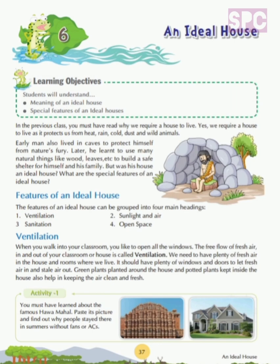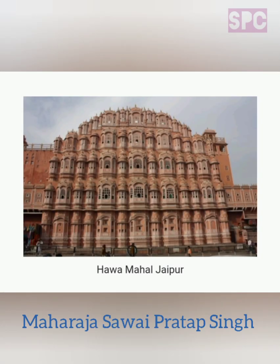Let's move to activity 1. You must have learned about the famous Hawa Mahal. Paste its picture and find out why people stayed there in summers without fans and ACs. The majestic Hawa Mahal or the Palace of Winds is often the first visual that comes to mind when one thinks of the pink city Jaipur. It was built in 1799 by Maharaja Sawai Pratap Singh. This palace has 957 small windows through which cool wind comes inside, making it a comfortable place to stay in summers. You have to paste the picture of this palace in your notebook and write why people stayed there in summers without fans and ACs.